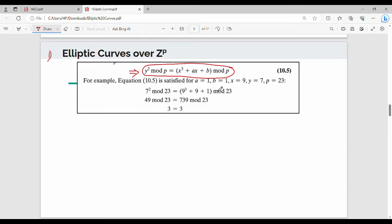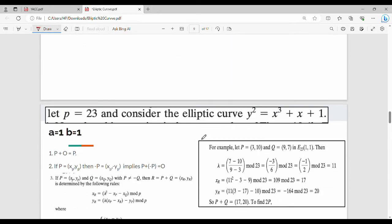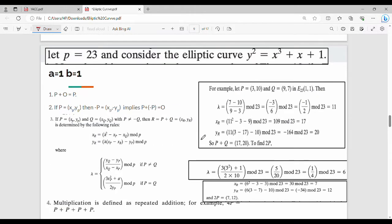For our specific example, we'll use a=1, b=1, and p=23. This is a very in-depth curve. The equation is y² = x³ + x + 1, where a=1 and b=1. Now let's discuss the four properties.